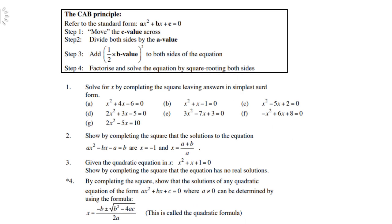The so-called CAP principle refers to the standard form ax squared plus bx plus c. Step 1: Move the c value across. Step 2: Divide both sides by the a value. You see, CAP—C, A, B. Step 3: Add the b value. Remember, C is for c value across, A is for the a value you must divide by, and B is your b value to both sides. Factorize and solve the equation by squaring the root on both sides.